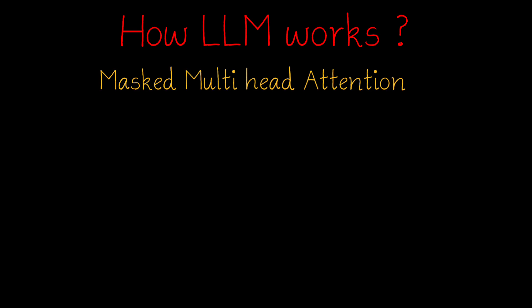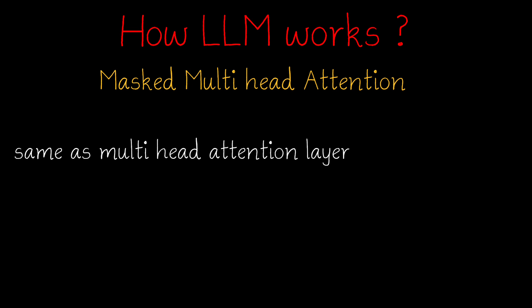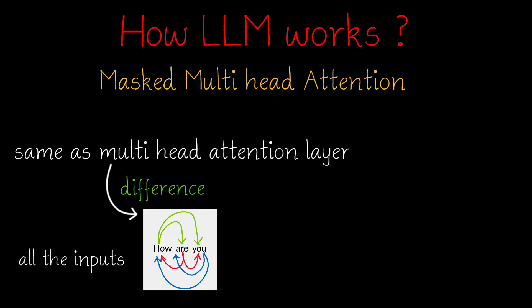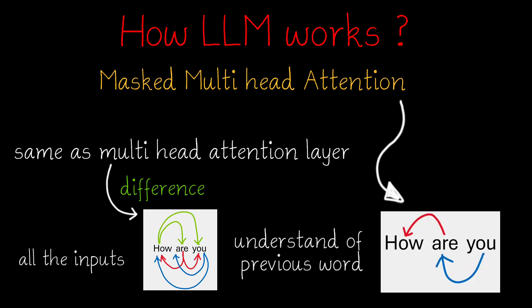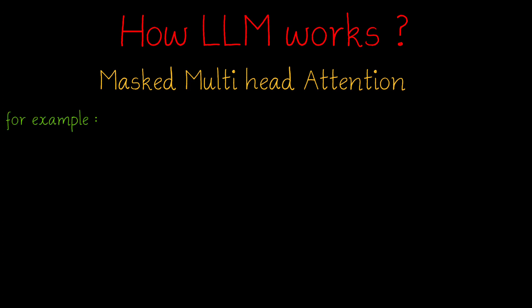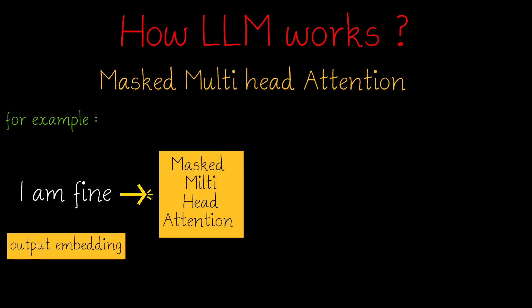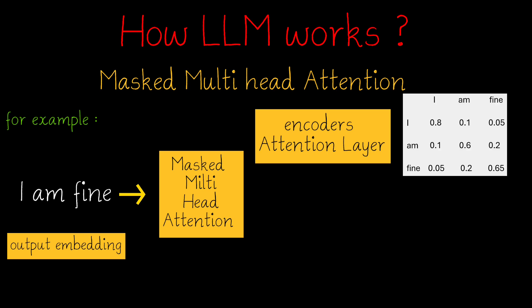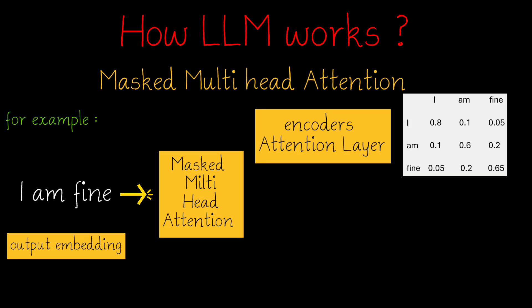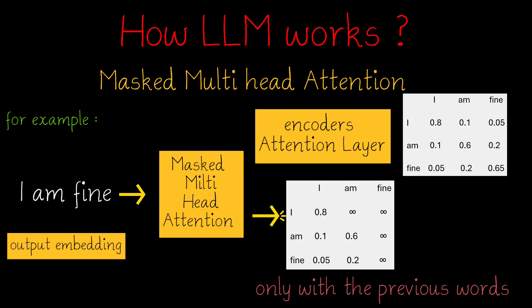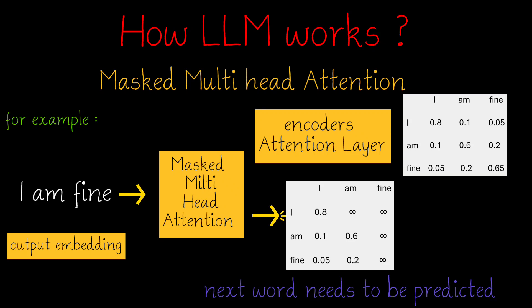Now let's understand the masked multi-head attention layer. This is the same as the multi-head attention layer in encoders. The only difference is that instead of having knowledge of all the input words, it only has the understanding of the words prior to it. For example, if 'I am fine' is the output embeddings given to the masked multi-head attention layer — in the encoder's attention layer, it had access to both previous and later word contexts. But in the masked attention layer, the matrix is formed using only previous words, because the next word needs to be predicted using the output layer.